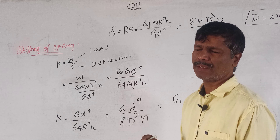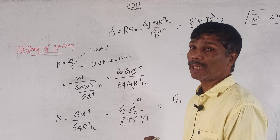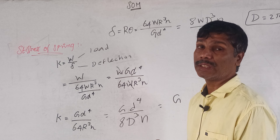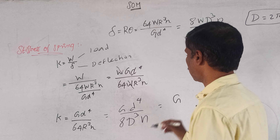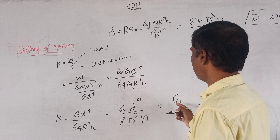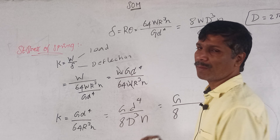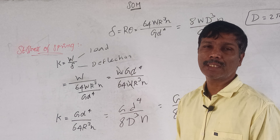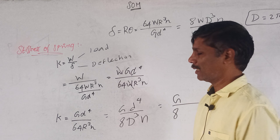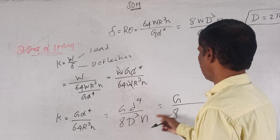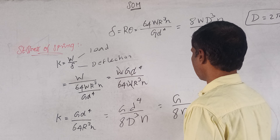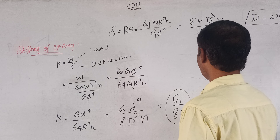So now I want to show you the formula. The deflection is 64WR³ divided by d⁴. Then the stiffness W divided by delta will be d⁴ divided by 64R³. So this gives us 4 and 8.